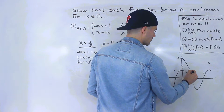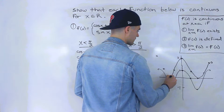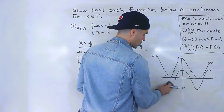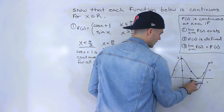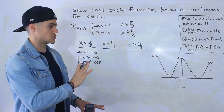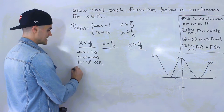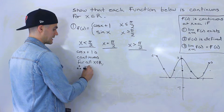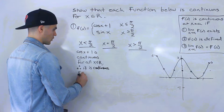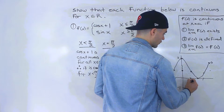And so the function shifted up looks like that — that is cos(x) plus one. Let me erase cos(x) and just leave cos(x) plus one. Notice that the domain for that function is x∈ℝ. So if cos(x) plus one is continuous for all x∈ℝ, then therefore it is continuous for x less than π/2.